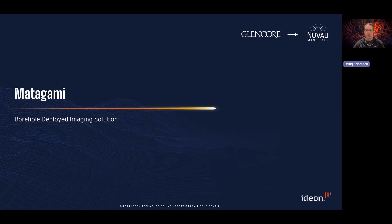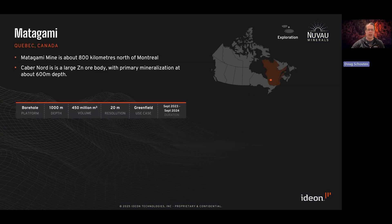The final case study I'll share today is from near the Metagami mine at the Cabanor deposit in Quebec. This deposit was owned by Glencore when the project was commissioned, but has since been transferred to Nouveau Minerals. Metagami mine is about 800 kilometers north of Montreal, and the Cabanor deposit is a large zinc ore body with primary mineralization at about 600 meters depth.